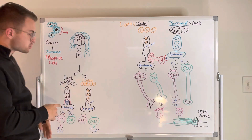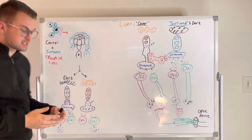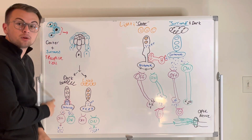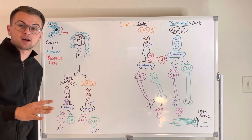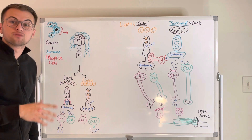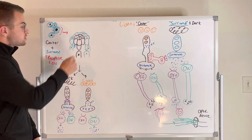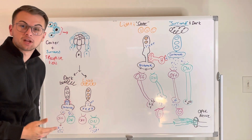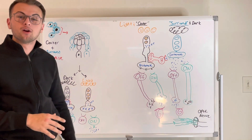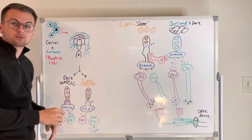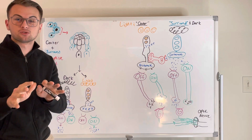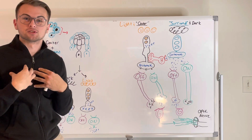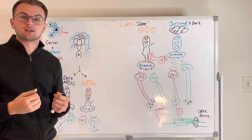Imagine a rod photoreceptor in the retina that is completely in the dark with no photons of light to be found. This rod cell is going to be depolarized by the dark sodium channels. Don't get it twisted — when a photoreceptor is in the dark, it's actually depolarized and releasing neurotransmitters. When it's in the light, it is actually hyperpolarized and not releasing neurotransmitters. That's a common misconception.